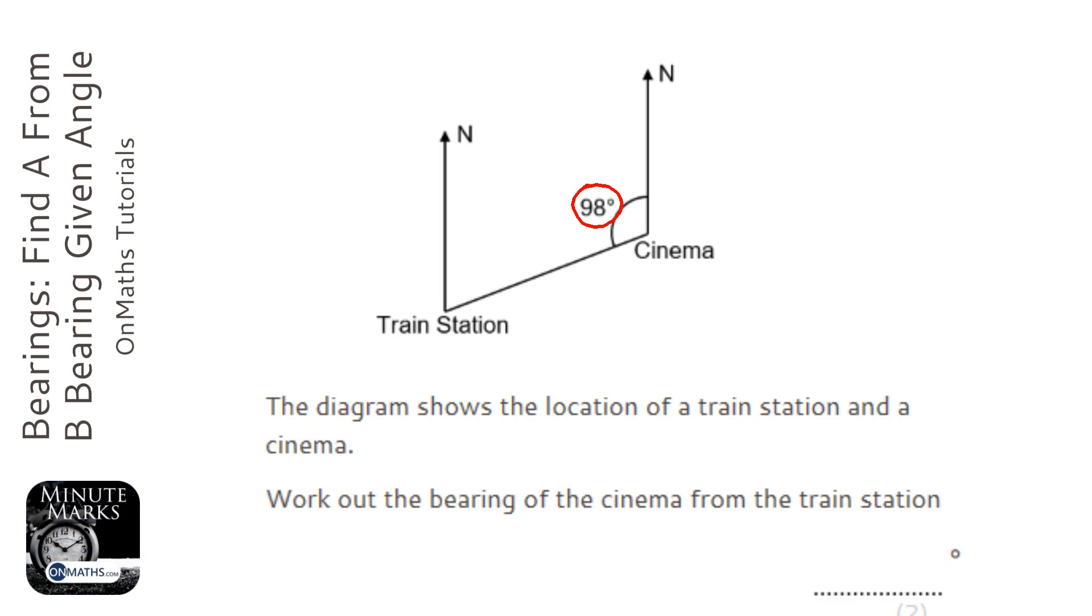The second important thing to realize in this question is it's asked for the bearing of the cinema from the train station. So we're at the train station and we're looking for the angle of the cinema, so we're looking for this angle here, which is the bearing of the cinema from the train station.